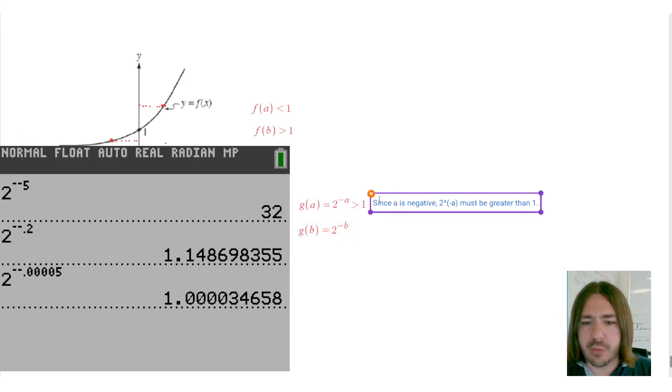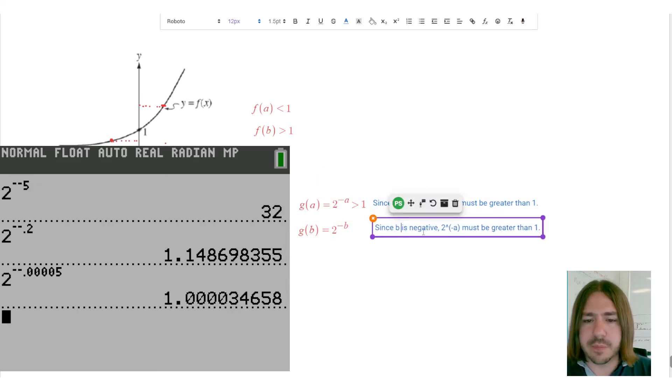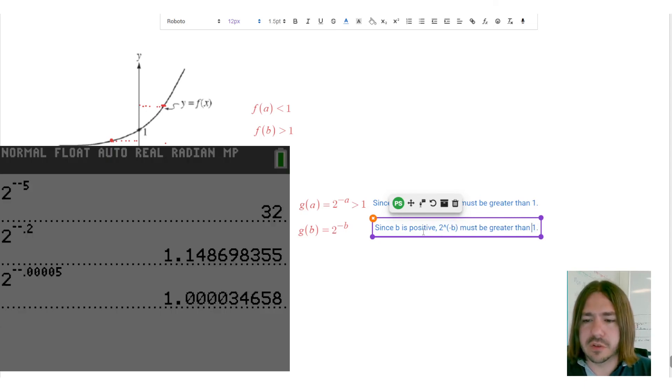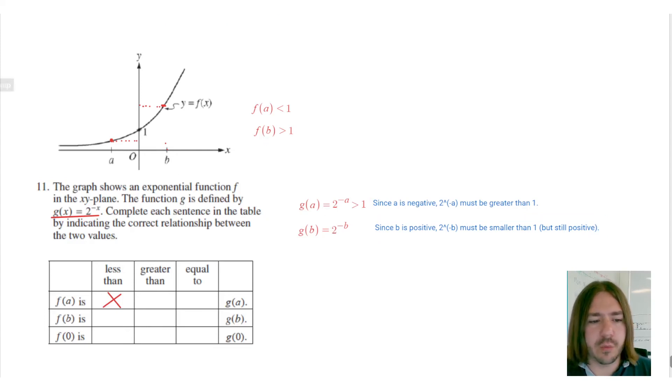Okay, and we can always test that, you know, by plugging in numbers like I did on the last example. Since b is positive, this has got to be smaller than 1. Okay, so if g of b is smaller than 1, and f of b is greater than 1, that means f of b is got to be greater than g of b.